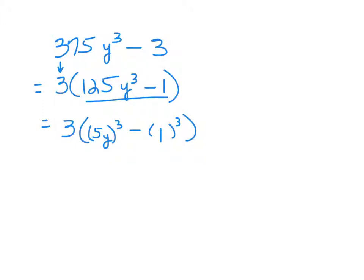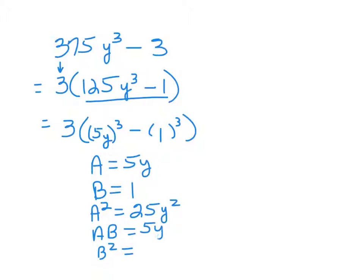Okay, so now my A is 5y, my B is 1, and the other three things that we always need are A squared, AB, and B squared. Now, you fill in those three blanks and I'll catch up to you. So, the A squared would have been 5y times 5y or 25y squared. AB would have been 5y times 1 or 5y and B squared would have been 1 times 1 or 1.